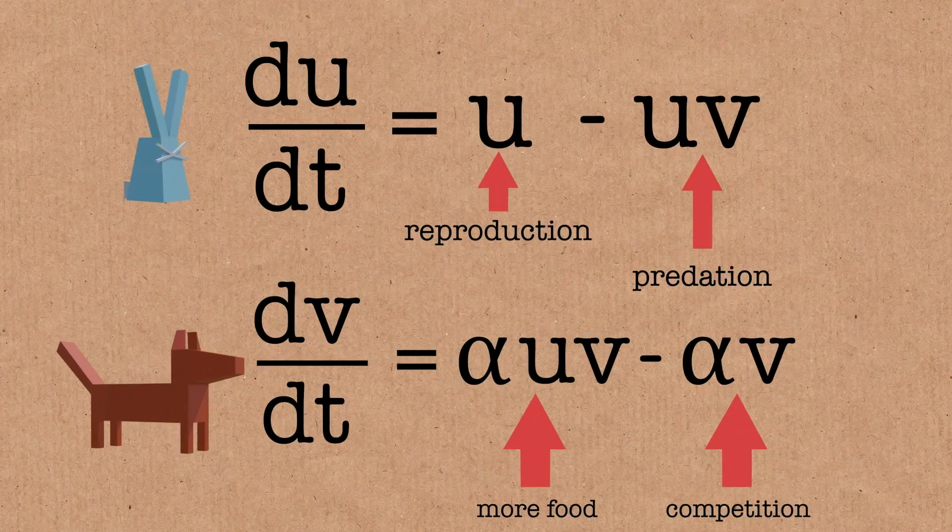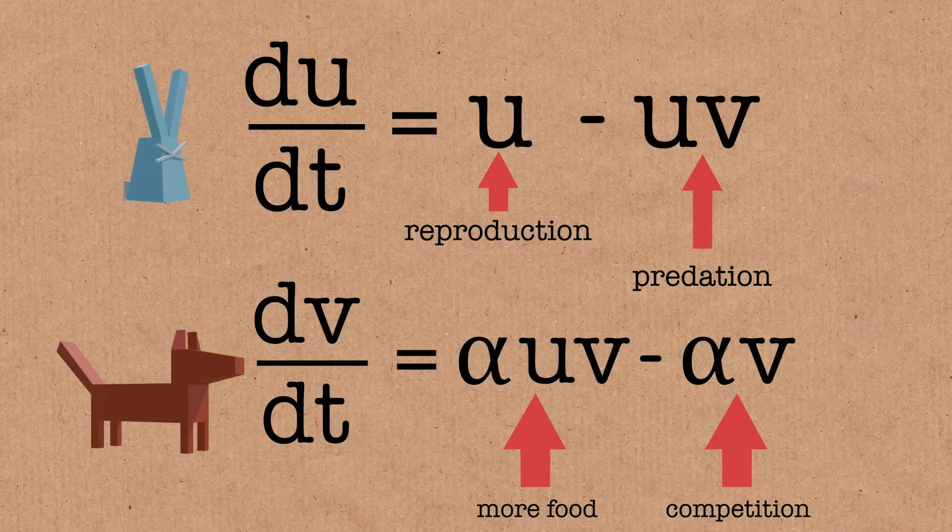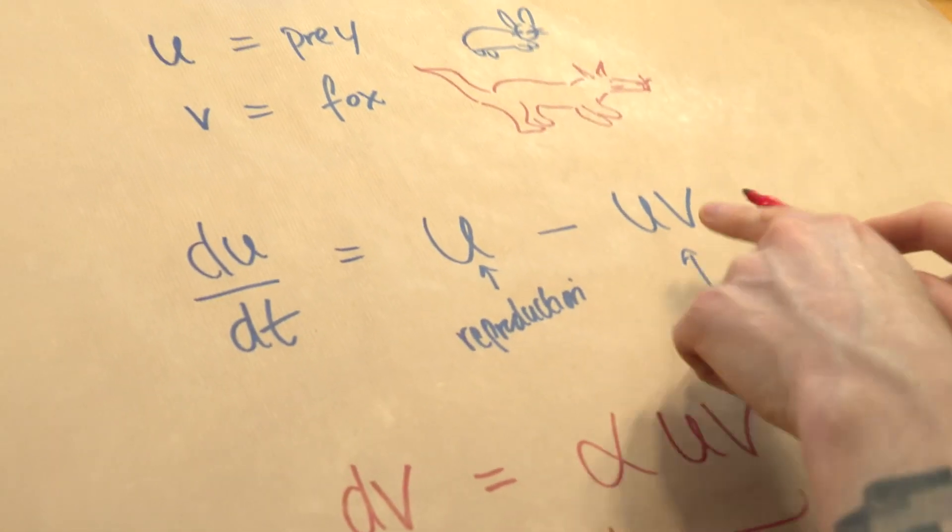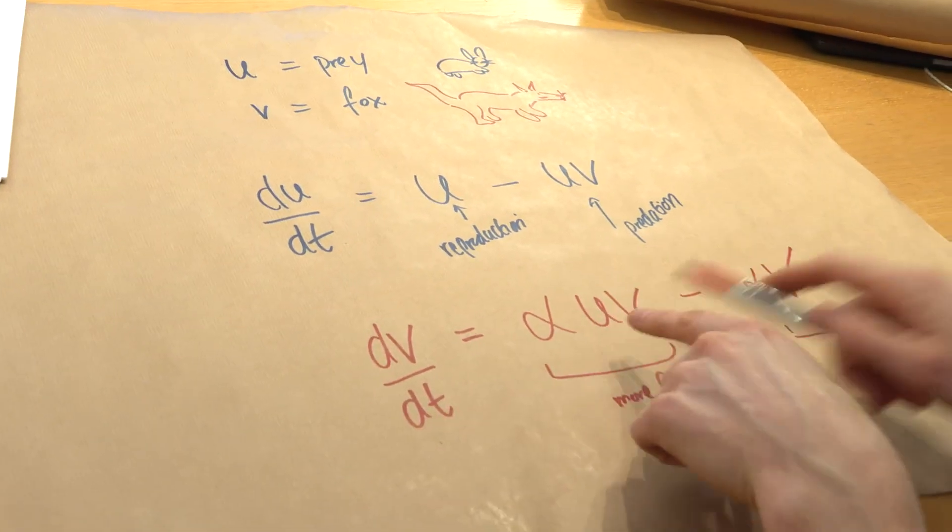This is now going to be our model, so this bit here is competition. We've got the rabbits, they grow because they reproduce, and they go down because there's more foxes. The foxes, there's more food available, so they increase with the rabbit population, and they decrease with their own population because of competition. So now we have a set of equations.